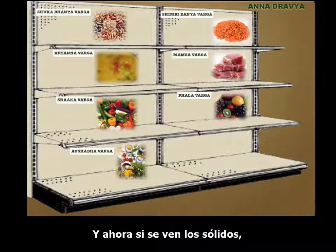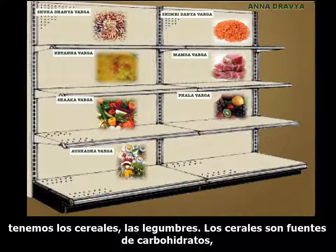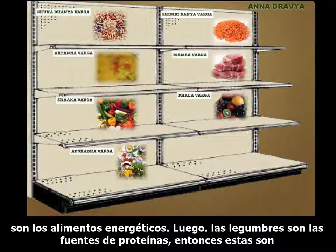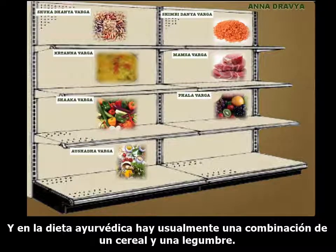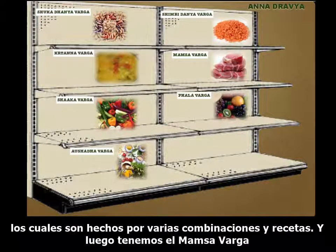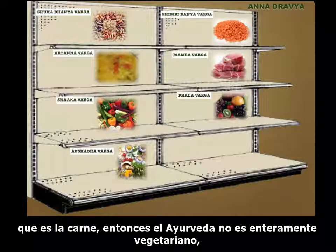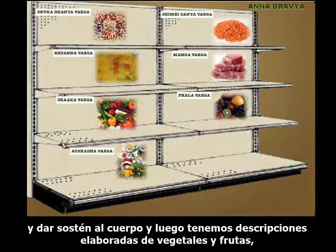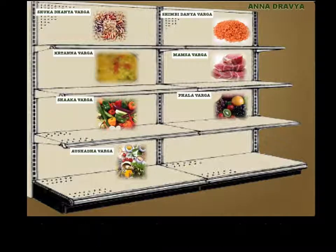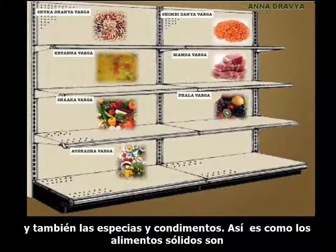Looking at the solids, we have cereals and pulses. Cereals are the sources of carbohydrates — the energy foods. Pulses are the sources of proteins — foods for the body's structure. In Ayurvedic diet, there is usually a combination of a cereal and a pulse. Then we have the category of cooked foods done by various combinations and recipes. And then we have the Mamsa Varga, which is meat — Ayurveda is not fully vegetarian and allows the use of meat for nourishment and support of the body. There are also elaborate descriptions of vegetables, fruits, and spices and condiments.